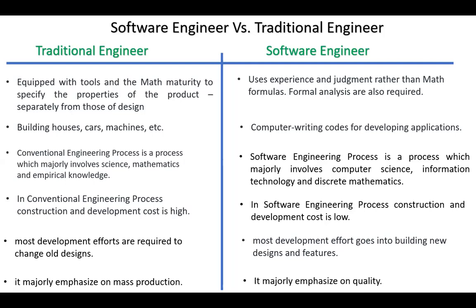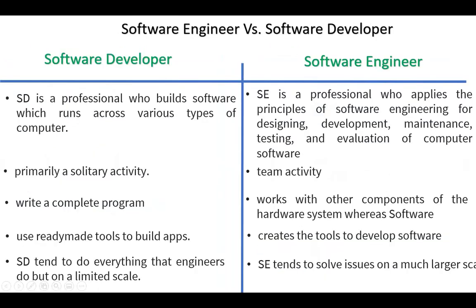Software engineering emphasizes more on quality, while traditional engineering emphasizes more on mass production. Next, software engineer versus software developer. A software developer is a professional who builds software which runs across various types of computer, while a software engineer is a professional who applies the principles of software engineering for designing, development, maintenance, testing, and evaluation of computer software.